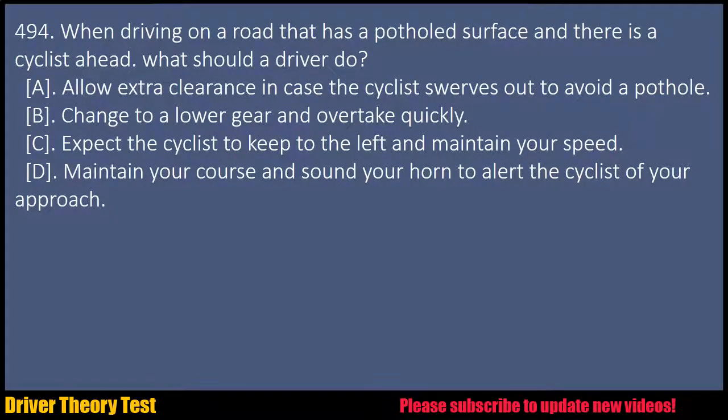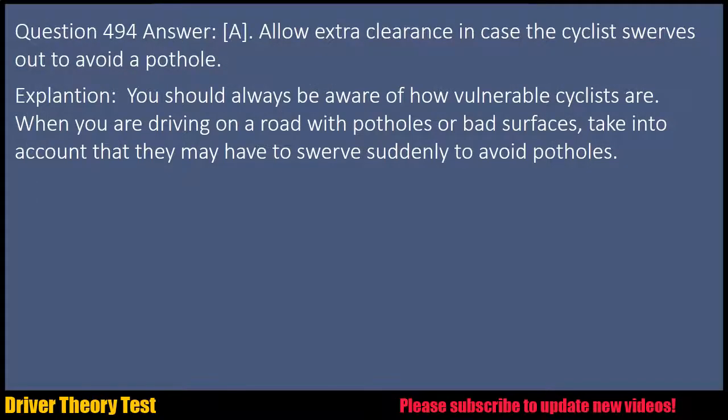Question 494: When driving on a road that has a potholed surface and there is a cyclist ahead, what should a driver do? A. Allow extra clearance in case the cyclist swerves out to avoid a pothole. B. Change to a lower gear and overtake quickly. C. Expect the cyclist to keep to the left and maintain your speed. D. Maintain your course and sound your horn to alert the cyclist of your approach. Answer: A. Allow extra clearance in case the cyclist swerves out to avoid a pothole. Explanation: You should always be aware of how vulnerable cyclists are. When you are driving on a road with potholes or bad surfaces, take into account that they may have to swerve suddenly to avoid potholes.